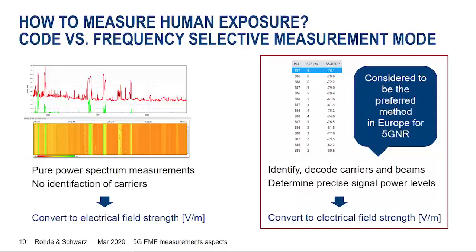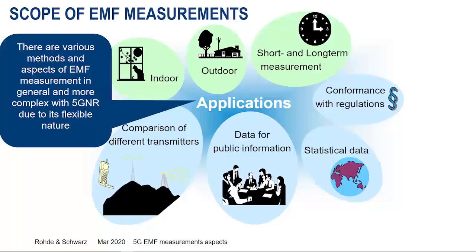We have two different ways to measure EMF: frequency selective measurement and code selective measurement. In frequency selective measurement, I don't care about the signal content — we do a power scan over a certain bandwidth and detect all signals. Every signal visible within this frequency band contributes to the overall exposure. In code selective measurement, we have a specific signal — typically a reference signal whose structure we know — and we measure the power explicitly on that specific code, for example the RSRP of an SSB block in 5G.